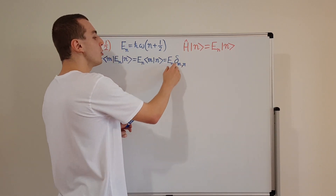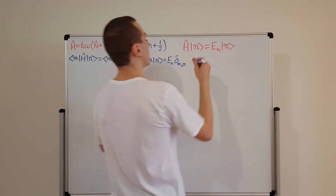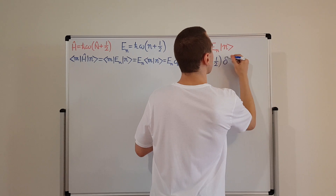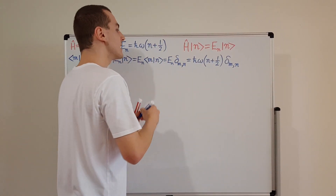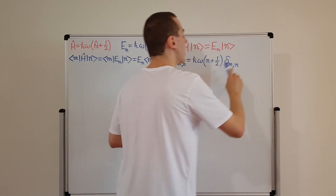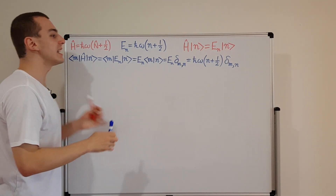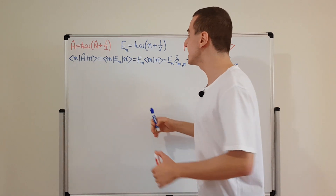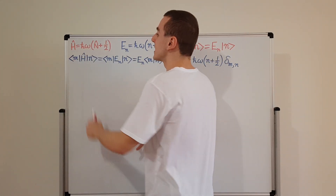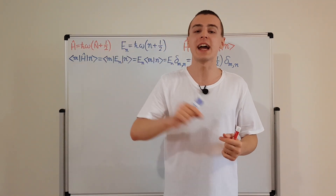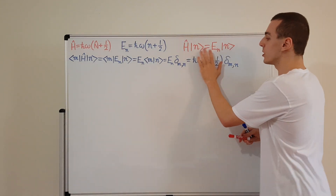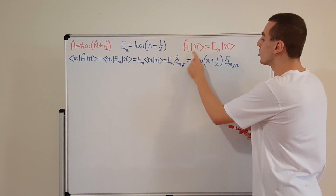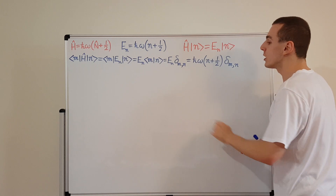Now I can write this in full form. I know the expression for the energy eigenvalue, so I substitute: h-bar omega times (n plus one half), multiplied by the Kronecker delta δ_{mn}. When the Kronecker delta describes the elements of a matrix, you get a diagonal matrix — which is exactly what we'd expect, because we are working in the energy eigenbasis. The Hamiltonian expressed in its own basis is diagonal, with the eigenvalues on the diagonal.